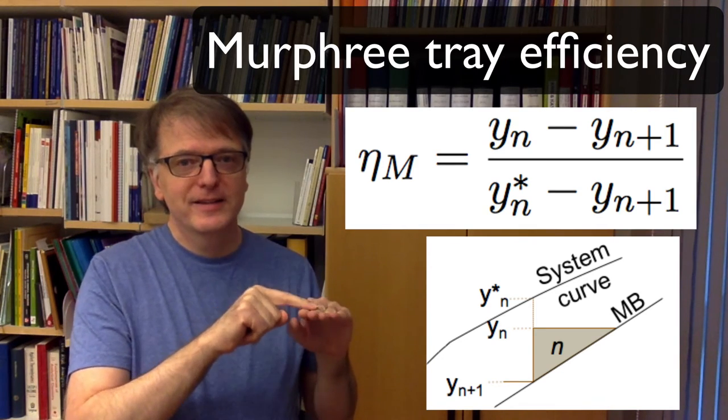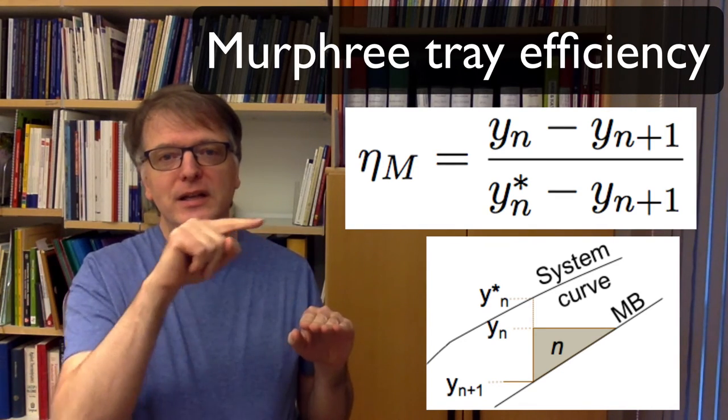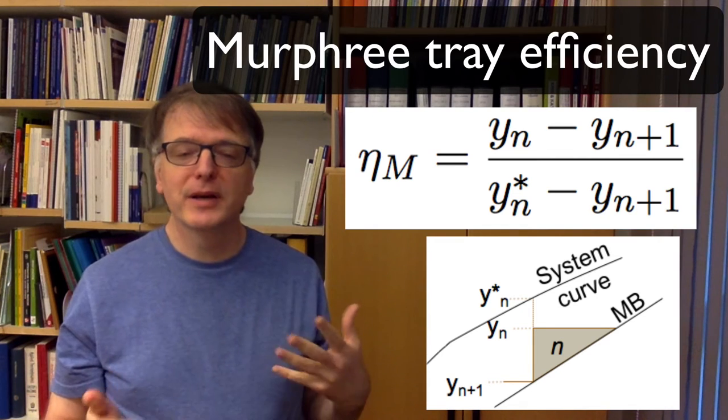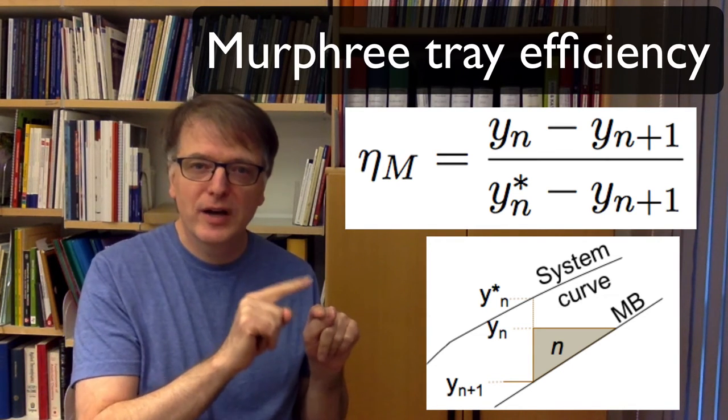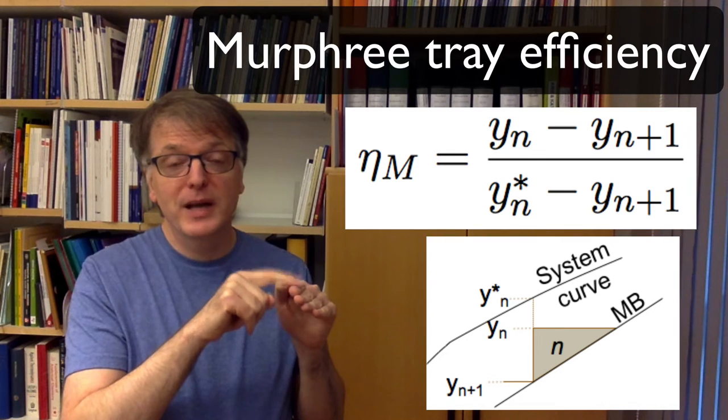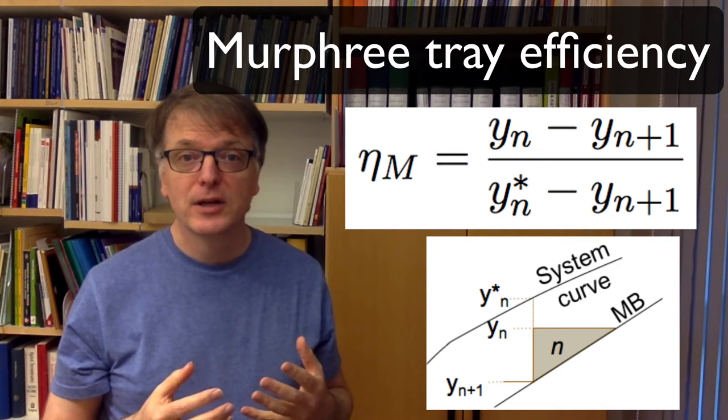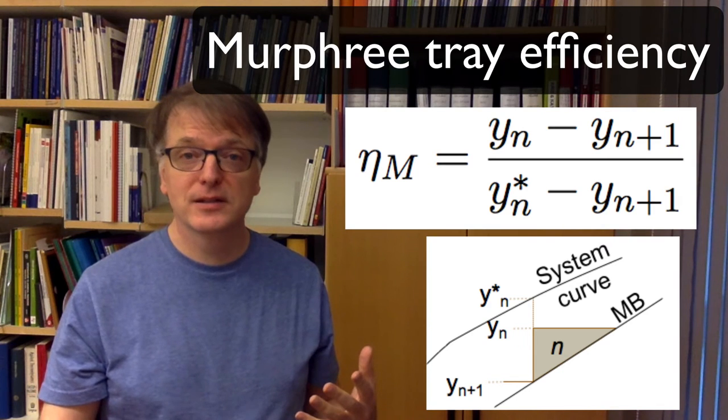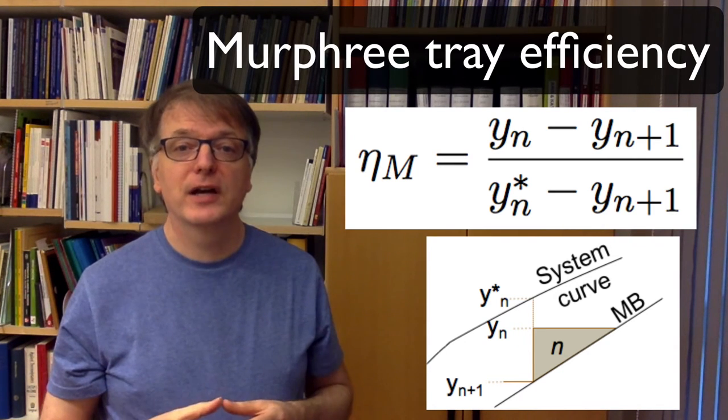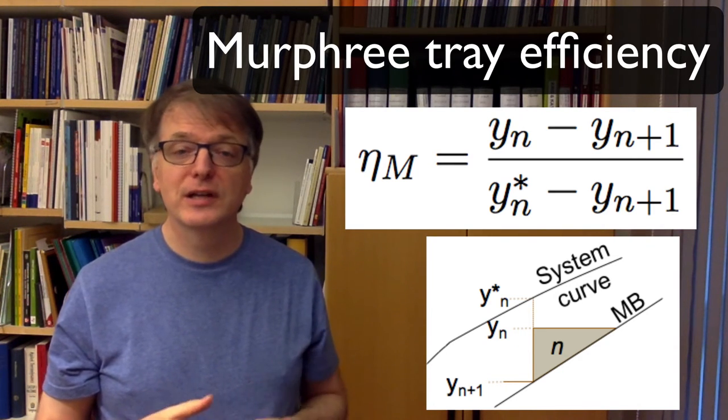So in making one triangle in the McCabe-Thiel graphical method we don't go the entire way from the mass balance up to the system curve. We go a fraction of that distance and that fraction is the Murphy tray efficiency.